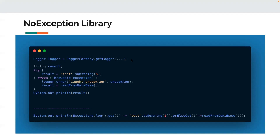Whatever I'm telling you now may be a little confusing, but this piece of information here is very simple logic we can write in our day-to-day life. I have a logger — maybe from Apache Log4j or SLF4J — and I have a string variable called result. I'm trying to find a substring of a string which has length four, but I'm trying to find a substring from index five, which normally throws an exception.